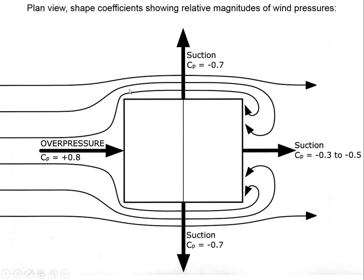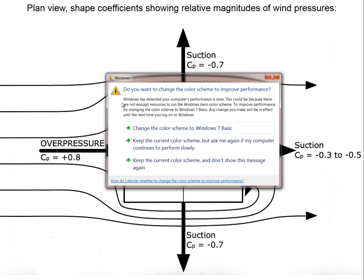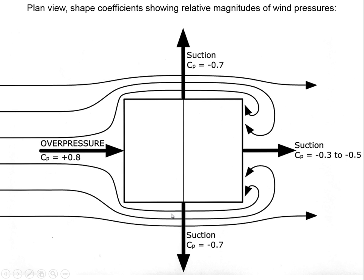This is a plan view of a building roughly square in plan. There's a line suggesting a gabled roof, with wind coming from the left. The wind effect on the wall facing the wind creates an overpressure. As the wind goes around the building, there's a Venturi or Bernoulli effect — we end up with suction on the side walls and also suction on the back wall.